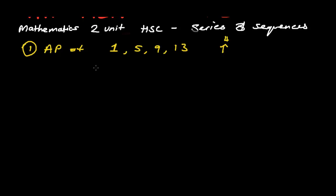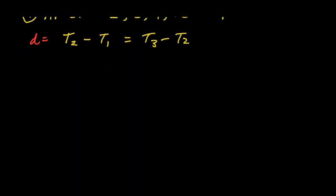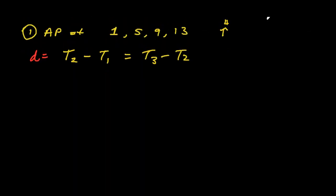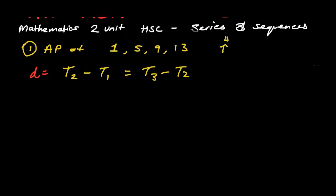So the formula to find what we call the distance, or referred to as d, is equal to term 2 minus term 1, which is also equal to term 3 minus term 2. Now the reason why we have two of these is just to confirm that it is correct.